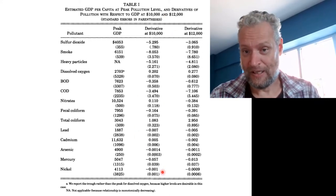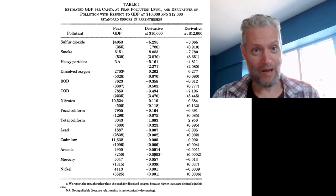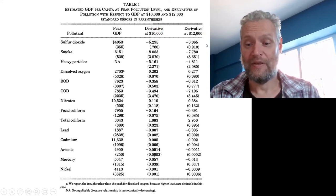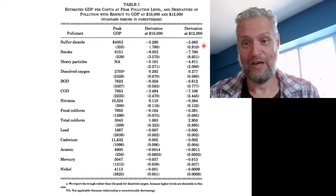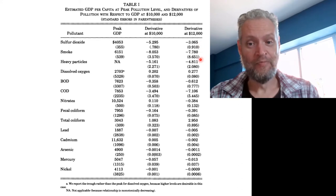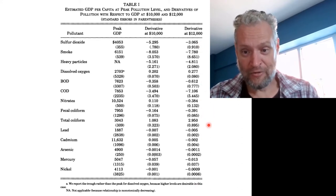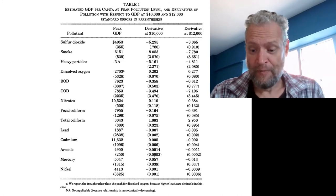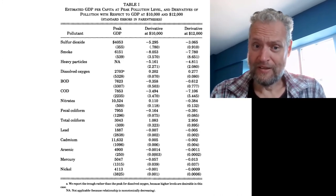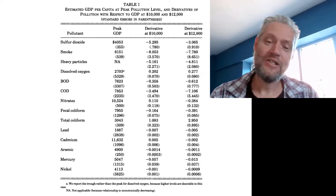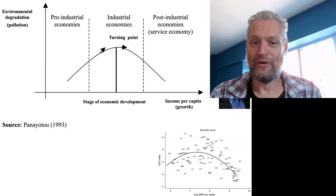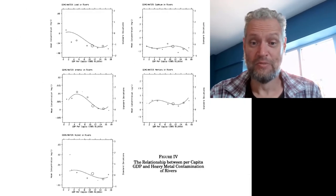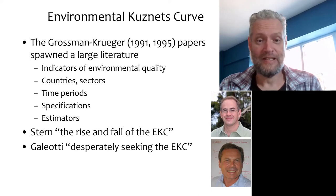They also show these numbers — whether you go up and down once you reach $10,000 or $12,000 per person per year. What they find is that once you exceed the $12,000 per person per year threshold, the environment gets better on every single indicator except for total coliform in water, which keeps getting worse. So there is some suggestion that the environmental Kuznets curve holds, in this paper that was published and widely noticed.